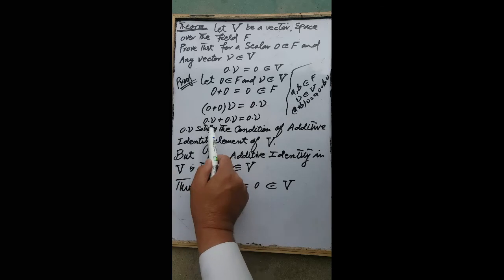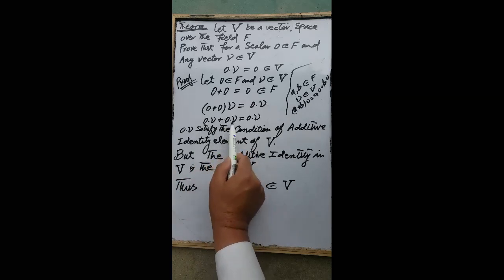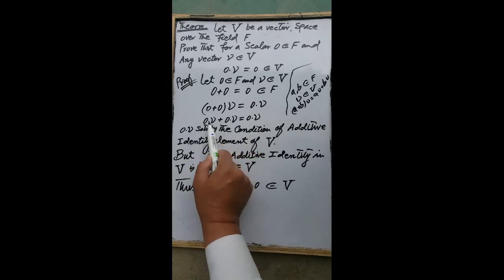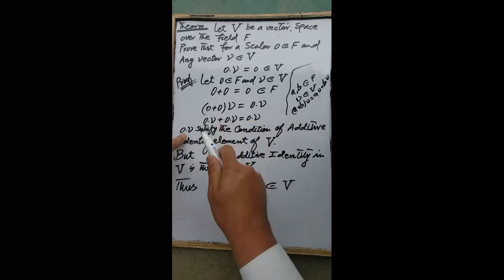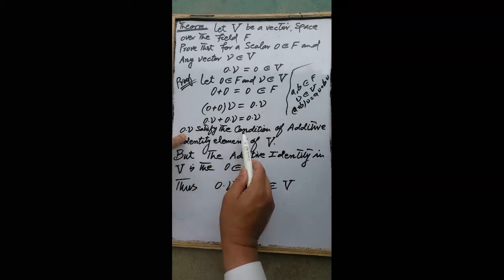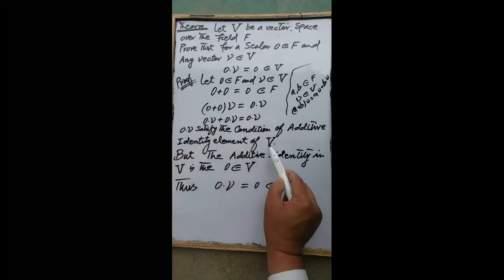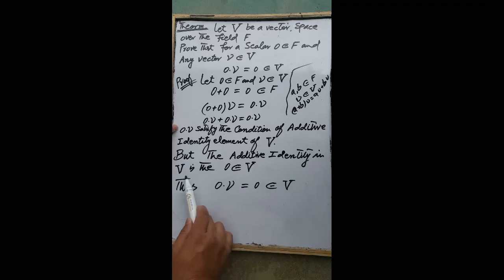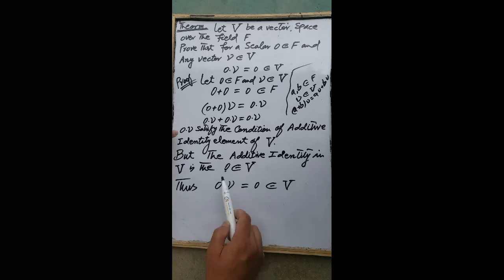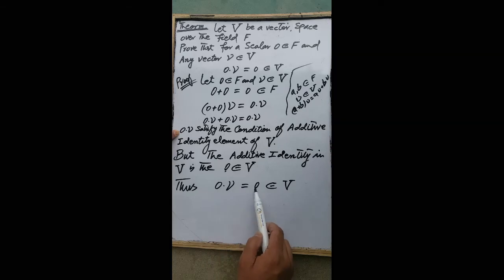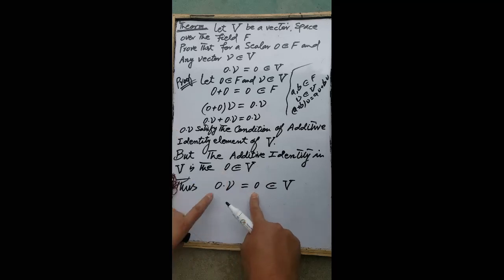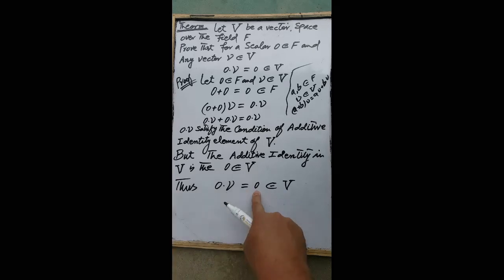Now, when we add the vector 0·v with itself and get 0·v, this means the vector 0·v satisfies the condition of the additive identity element of the vector space V. But the additive identity element of vector space V is the zero vector. Therefore 0 multiplied by v must equal the zero vector, which is what was required to prove.